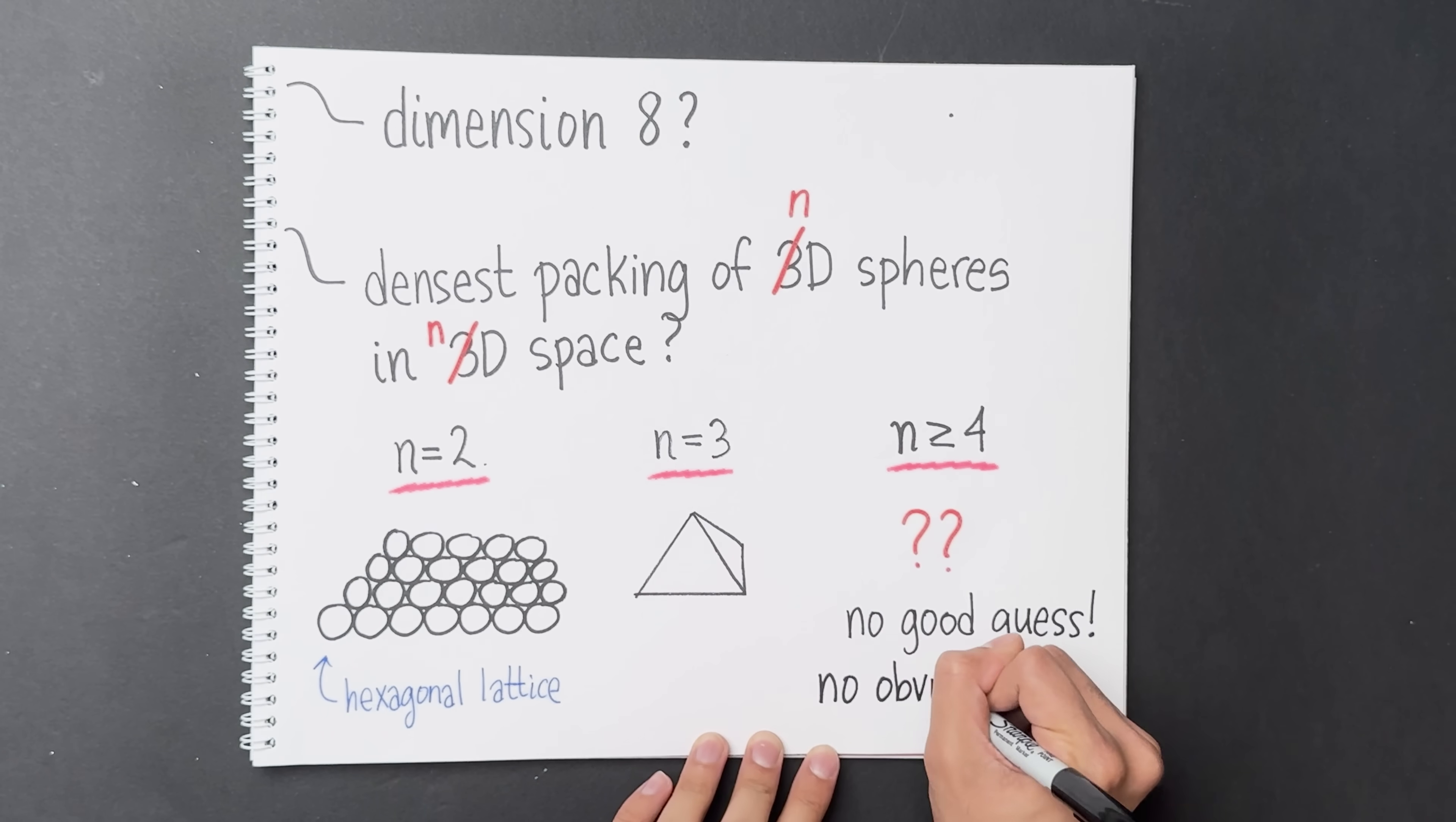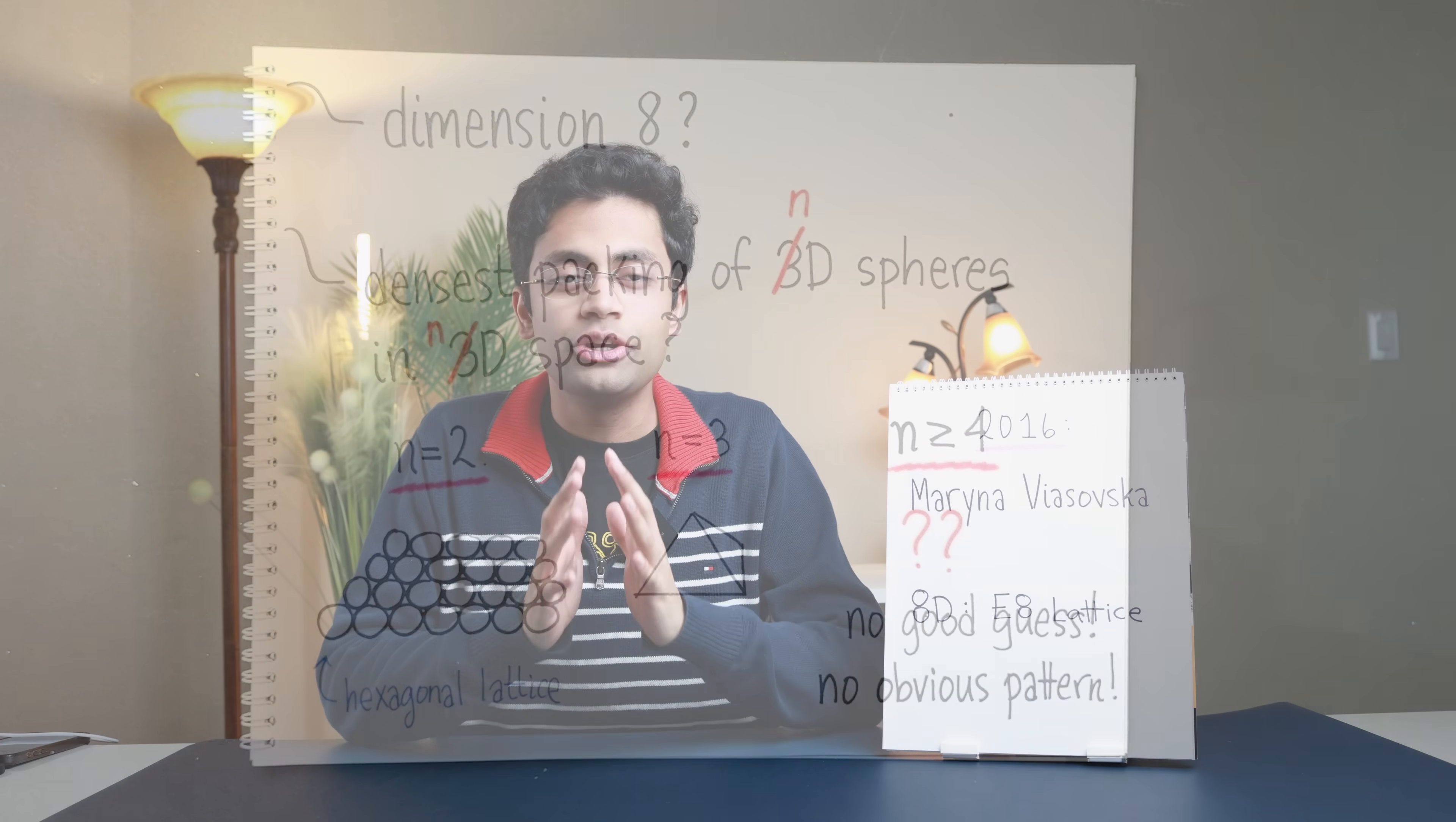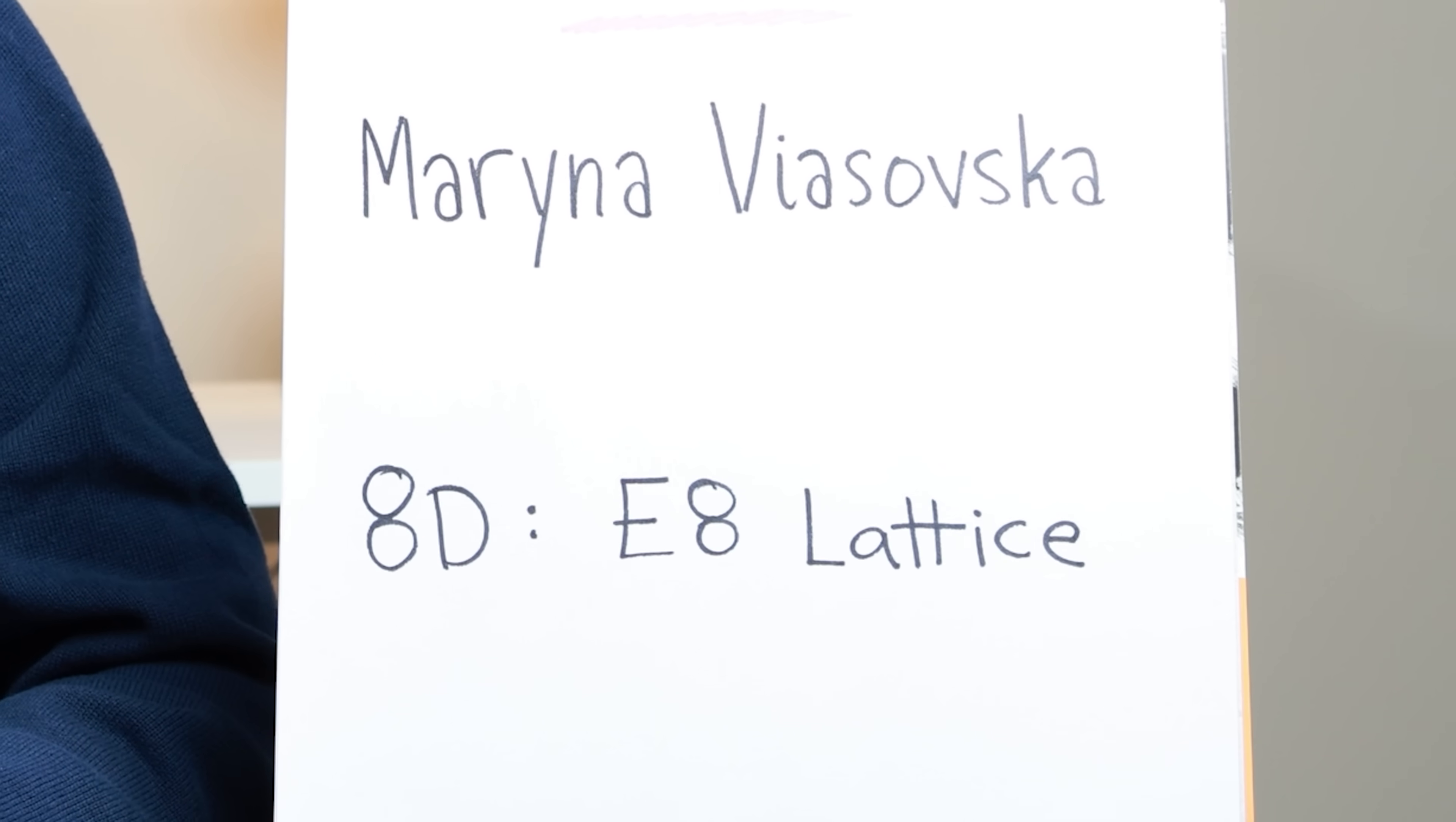To make matters worse, there's no obvious pattern for the densest packing as you vary the dimension n. But in 2016, something extraordinary happened. A mathematician named Marina Vyazovska proved the optimal sphere packing in 8 dimensions. She showed that there was a structure called the E8 lattice in 8 dimensions, which gives the optimal packing.